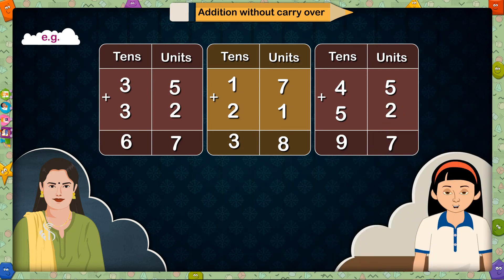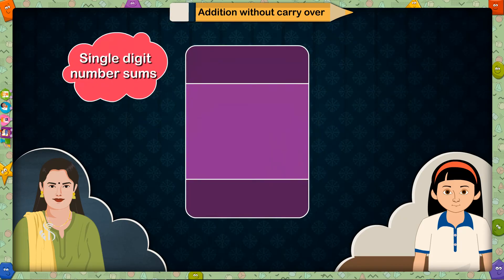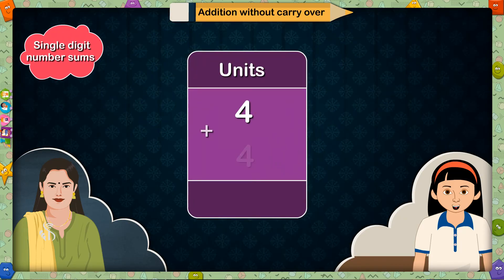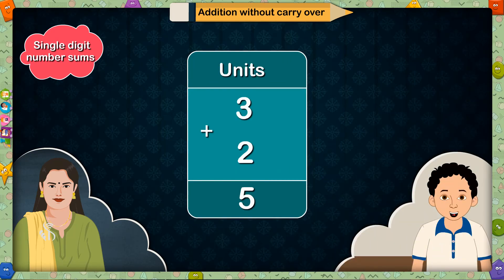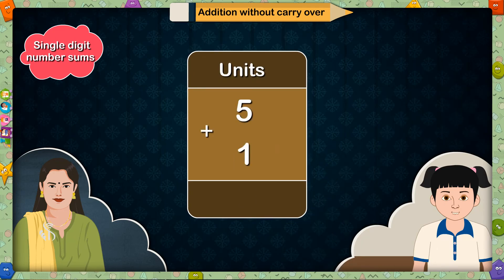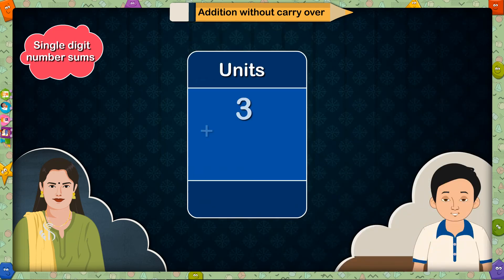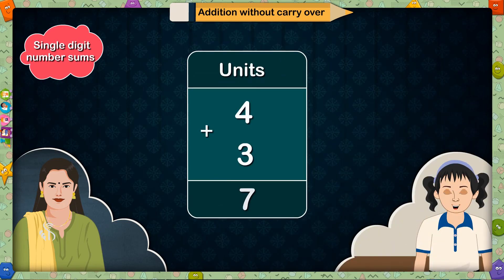Yes, Madam. Come on then — first tell me single-digit number sums. 4 plus 4 is equal to 8. 3 plus 2 is equal to 5. 5 plus 1 is equal to 6. 3 plus 1 is equal to 4. 4 plus 3 is equal to 7. Very nice!